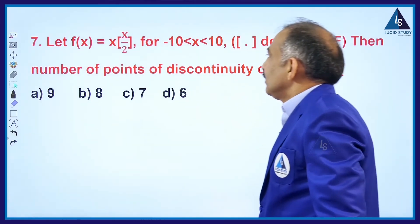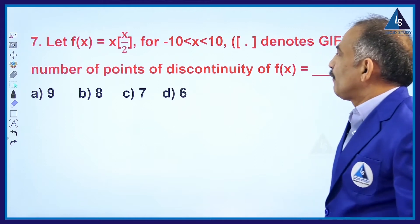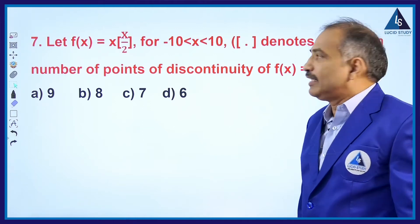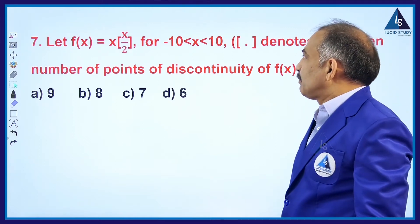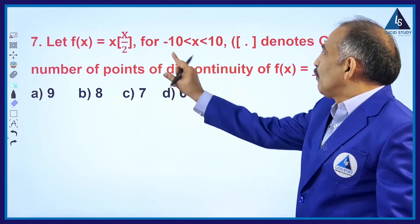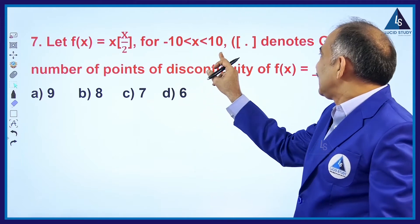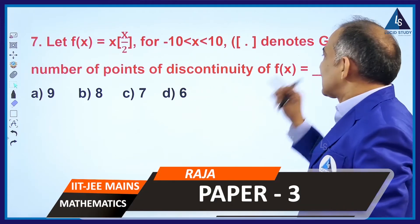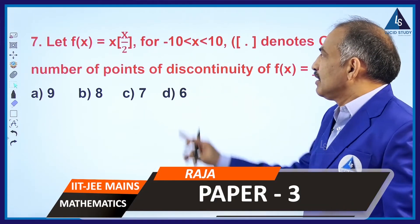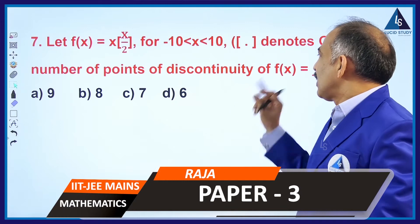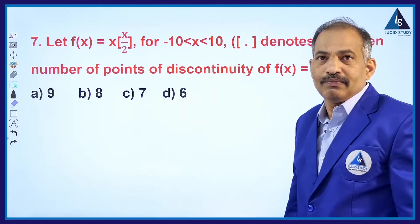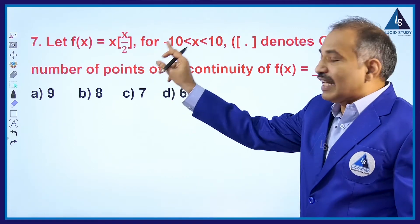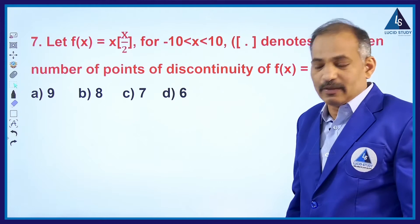Problem number 7. Let f(x) = x·[x/2] for -10 < x < 10, where [·] denotes the greatest integer function. Then find the number of points of discontinuity of f(x). So f(x) = x·[x/2].